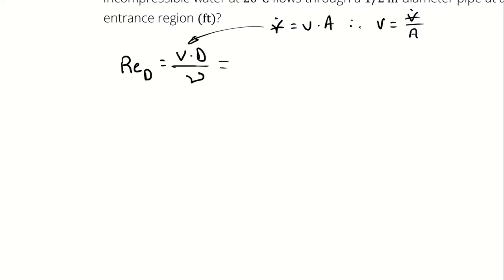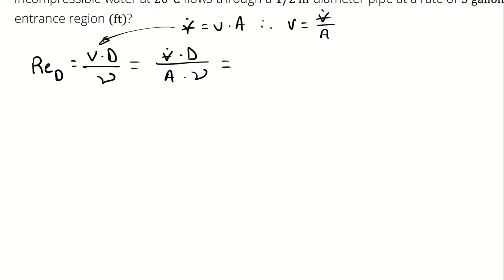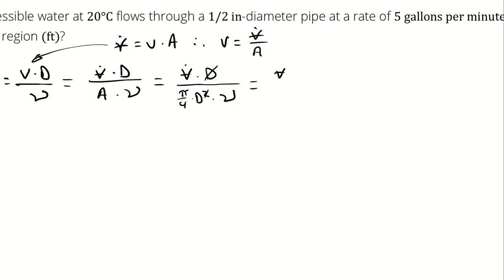To write volumetric flow rate times diameter divided by cross-sectional area times kinematic viscosity. I recognize that for a circular pipe, the area can be represented in terms of diameter. So I will write volumetric flow rate times diameter divided by pi over 4 times diameter squared, and then I have to multiply by kinematic viscosity again. The diameter in the numerator cancels one of the diameters in the denominator, leaving me with volumetric flow rate times 4 divided by pi times diameter times kinematic viscosity.